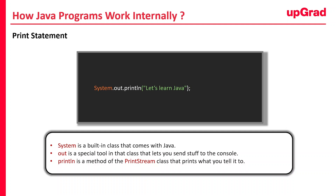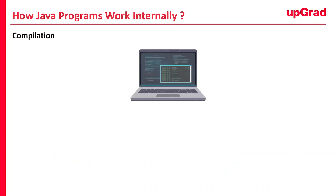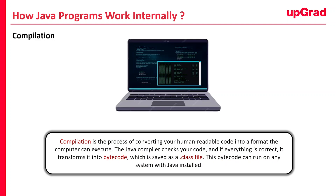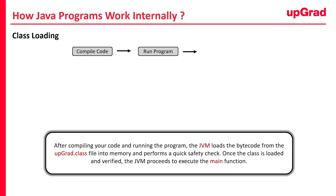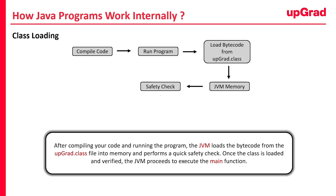Now that we know what the code does, let's see what happens when you click run. Compilation means turning your human-readable code into something the computer can actually run. When you compile your Java file, Upgrade.java, the Java compiler checks if everything is correct. If it is, it turns your code into bytecode and saves it in a file called Upgrade.class. This bytecode is like a universal language that any computer can understand, as long as it has Java installed. Once your code is compiled, the next step is class loading. The JVM loads that bytecode from the Upgrade.class file into memory and does a quick check to make sure everything is safe — like a pre-flight check before taking off.